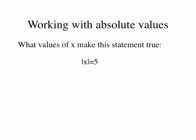When we're working with absolute values in equations, we need to think to ourselves what values of x will make a statement true. For example, here's a statement: the absolute value of x is five. What numbers could x be? There are two different numbers we could plug in for x that would make it true. One is x equal to five, and the other is x equal to negative five, because when we take the absolute value of either five or negative five, the answer we get is just plain old five.